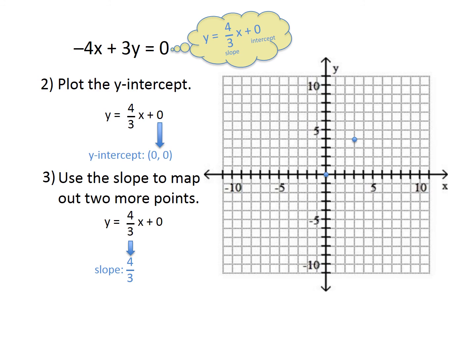Place that point, then go up from that one—up 4 and to the right 3—and place another point. You can map this out up or down; we had room to go up both times, so we just did that.